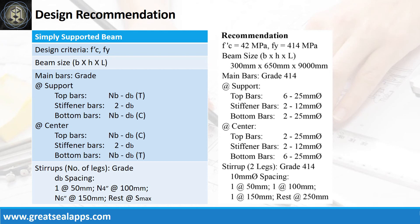Design recommendations: FC' equals 42 MPa, FY equals 414 MPa, beam size is 300mm by 650mm by 9000mm. Main bars of grade 414. At support: top bars — 6 pieces of 25mm bar; stiffener bars — 2 pieces of 12mm bar; bottom bars — 2 pieces of 25mm bar. At center: top bars — 2 pieces of 25mm bar.